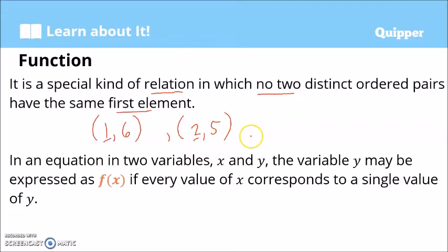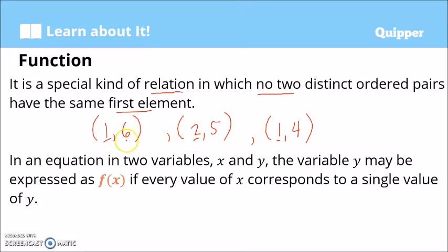However, if we add another ordered pair — let's say (1, 4) — notice that we have the same first element, which is 1 and 1. Therefore, this is not a function already.